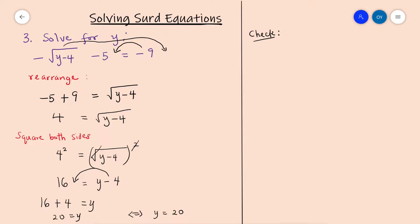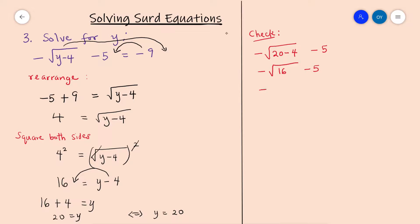We substitute y equals 20 back into the equation: negative root of 20 minus 4 minus 5. This becomes negative square root of 16 minus 5. The square root of 16 is 4, so we have negative 4 minus 5, which confirms the answer is correct.